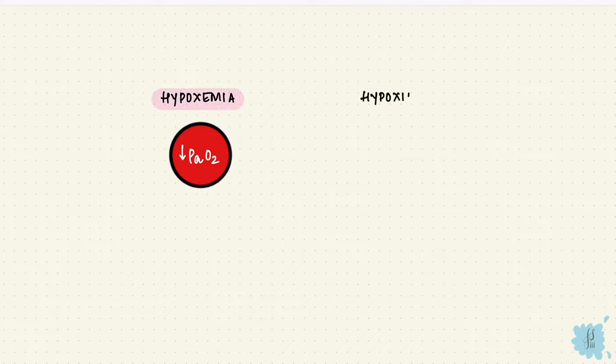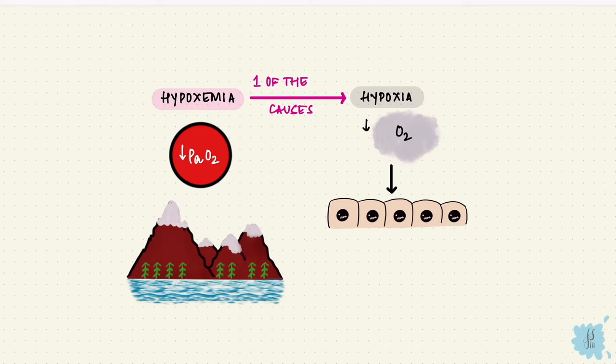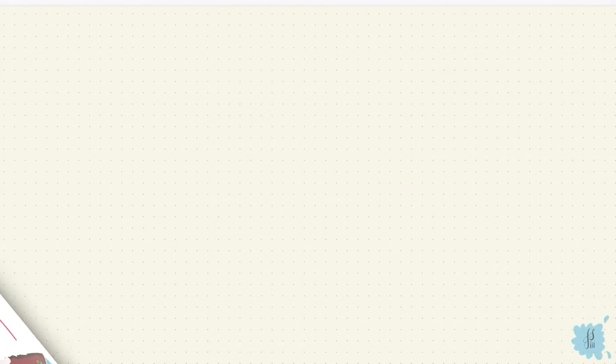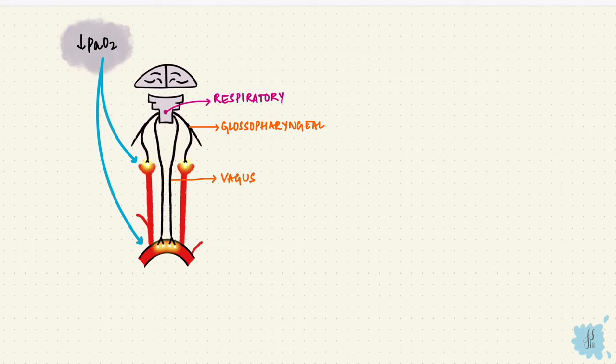The low arterial oxygen is called hypoxemia. Hypoxia is reduced oxygen utilization or delivery to tissues. So hypoxemia is one of the causes of hypoxia and high altitude can result in hypoxemic hypoxia. So once the arterial oxygen drops to less than 60, the peripheral chemoreceptors get stimulated. And via the glossopharyngeal and the vagus nerves, the respiratory centers get stimulated, increasing ventilation.